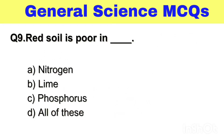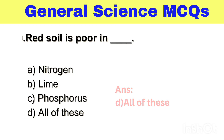Question No. 9. Red soil is poor in — Option A. Nitrogen, B. Lime, C. Phosphorus, D. All of these. The right answer, Option D. All of these.